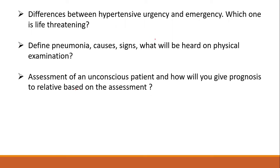Assessment of an unconscious patient and how to give a prognosis to relatives based on your assessment — this is a tricky question. Make sure ABC and GCS are done. It is better to prepare the relatives' minds for the worse rather than telling them the patient is fine when in reality they are not. Let them know the condition is serious.